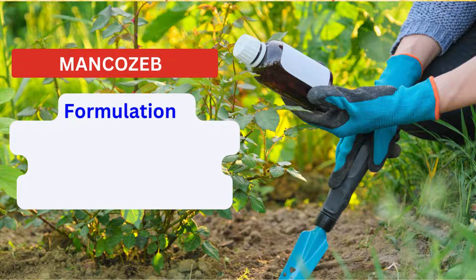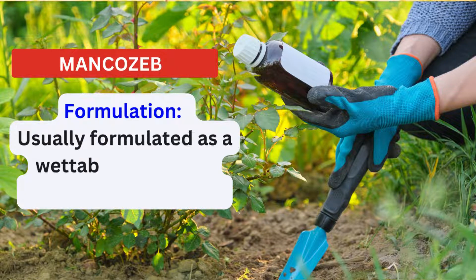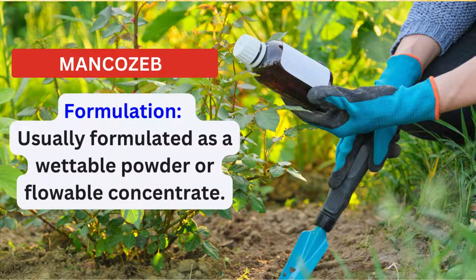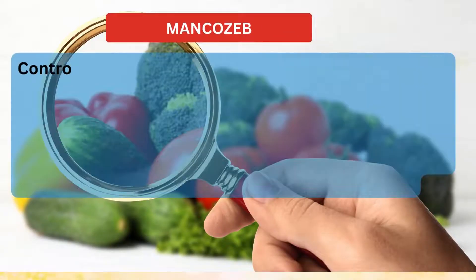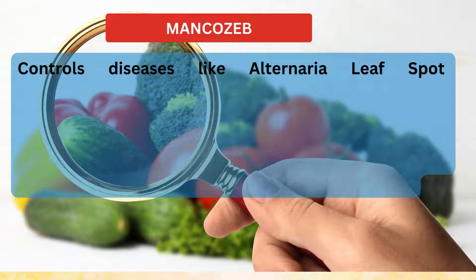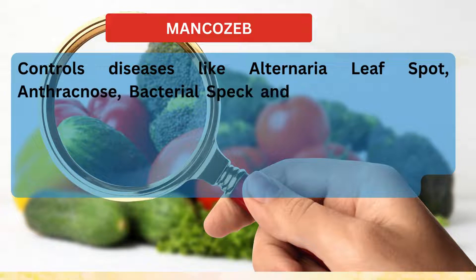Common formulation: Mancozeb is typically available as a wettable powder or flowable concentrate. Best uses: It serves as a broad-spectrum fungicide, effectively preventing and controlling numerous fungal diseases such as alternaria leaf spot.